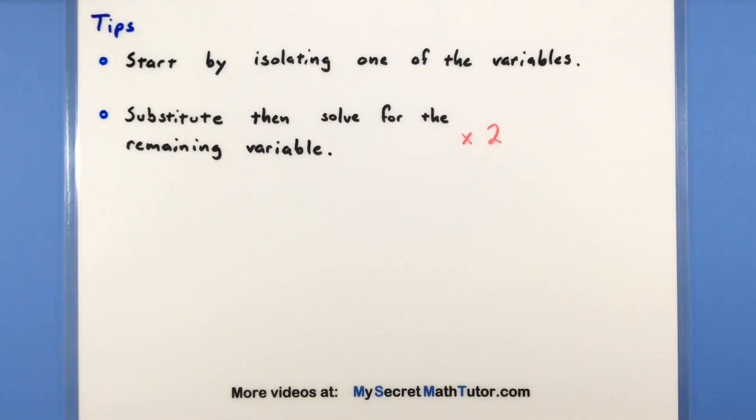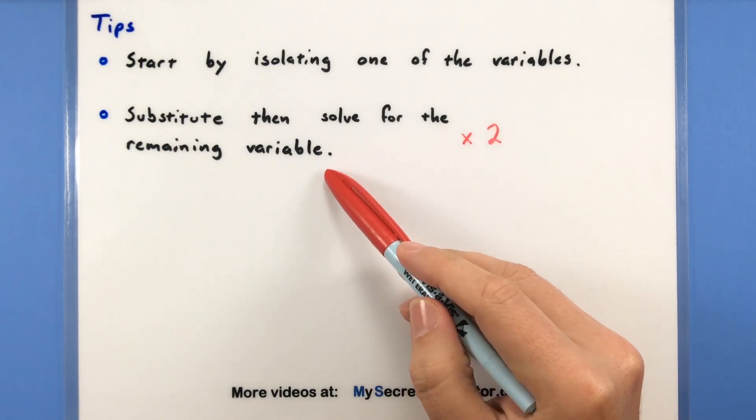The very first step is you're going to start by isolating one of your variables. It doesn't matter which one you actually isolate, but go ahead and get one of them all by itself. Once you have this done, then you'll go ahead and substitute that variable into the other equation and solve for the remaining variable.